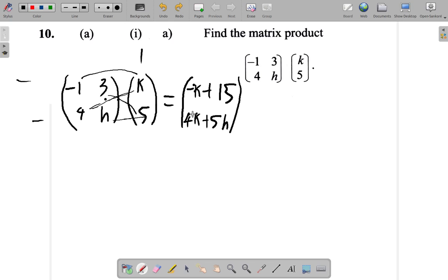Alright, so that seems like it. So it is negative K plus 15, 4K plus 5H. That's negative 1 by K, negative K, plus 3 by 5, 15. Then down here, 4 multiplied by K, 4K, plus H multiplied by 5, 5H.